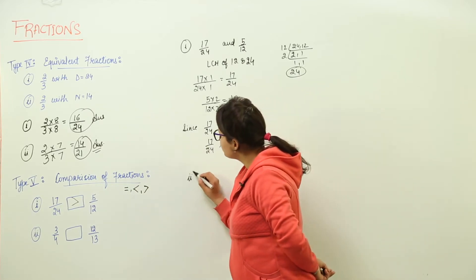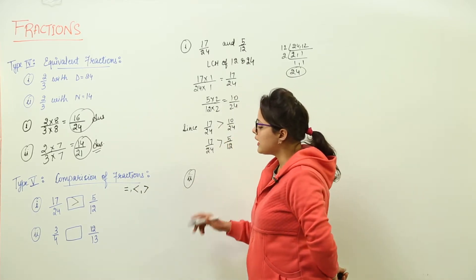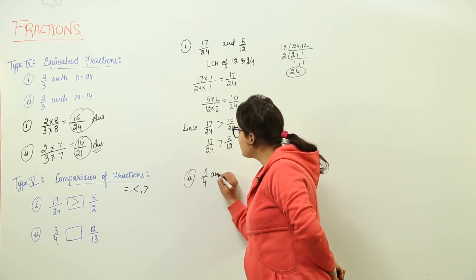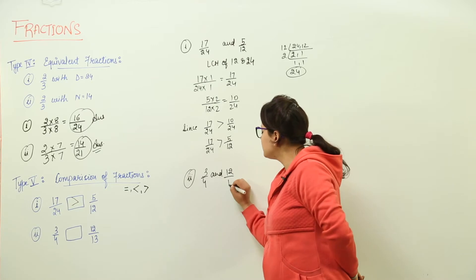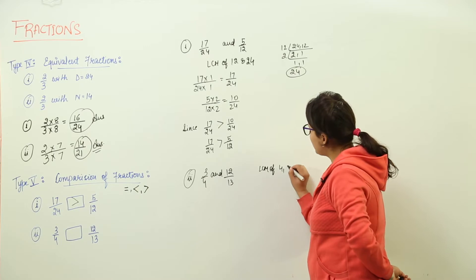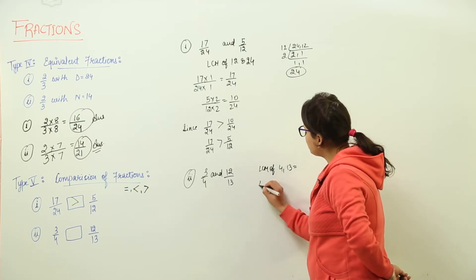The next one is where we have to compare 3 by 4 and 12 by 13. Doing the same thing, we write 3 by 4 and 12 by 13. We take out the LCM of denominators, that is 4 and 13, which will be equal to what?